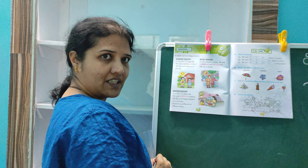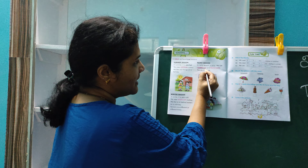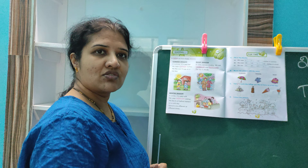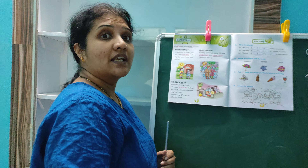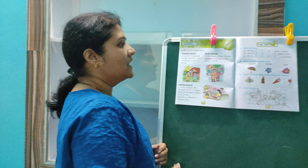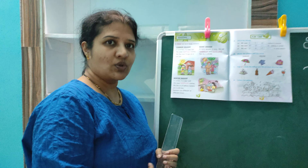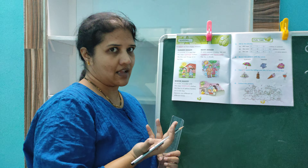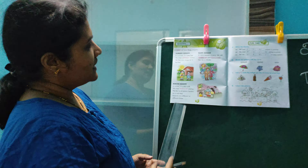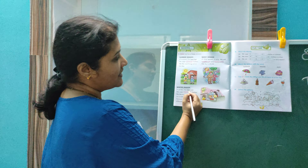Now let's look at rainy season. In rainy season it will rain, right? We have heavy rainfall. We use umbrellas and rain coats to protect us from rain. And the sky will be cloudy, right? There will be black clouds in the sky. You cannot see the sun.